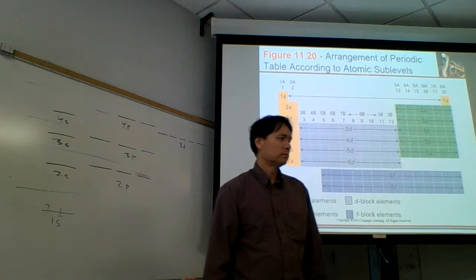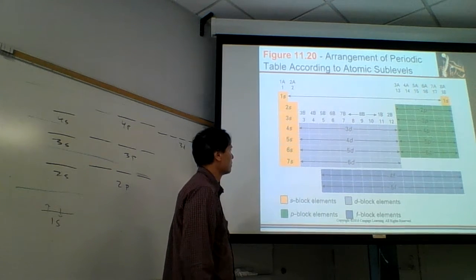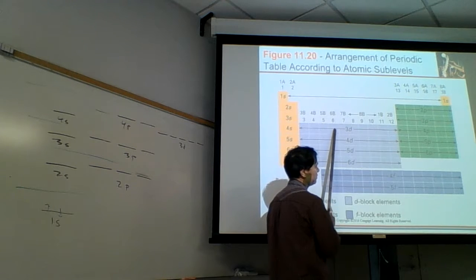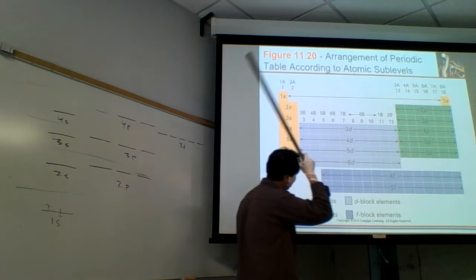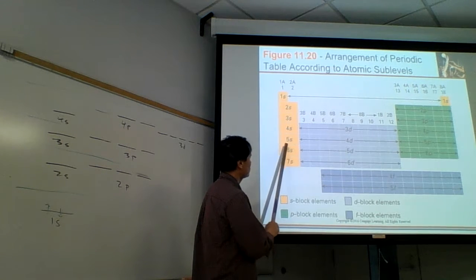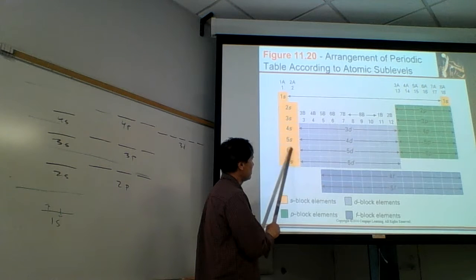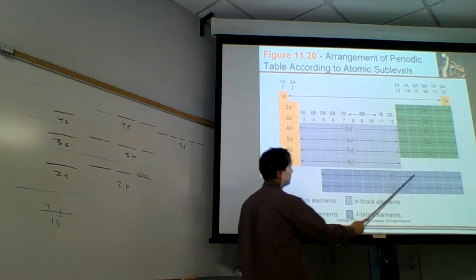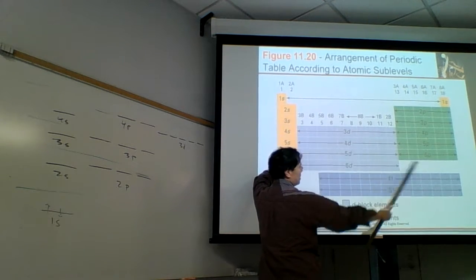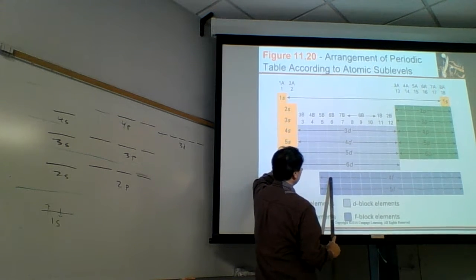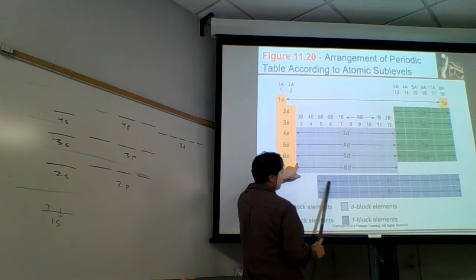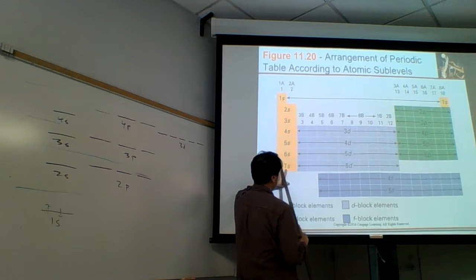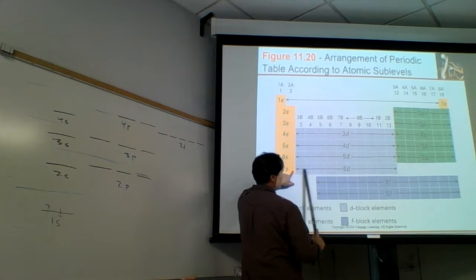The fifth shell consists of 5s, 4d, and 5p — very similar sub-shells to the fourth. The sixth shell starts with 6s, but gets tricky because there's not enough room. It goes 6s, 4f, to 5d, to 6p. They removed the 4f and dropped it down in the table to avoid making it very wide. The seventh shell does the same: 7s, down to 5f, to 6d, to 7p.